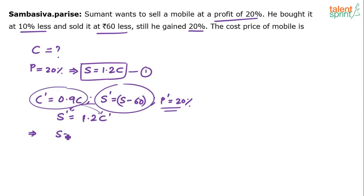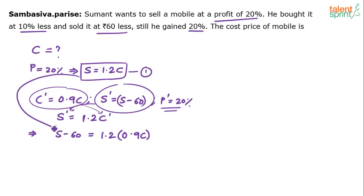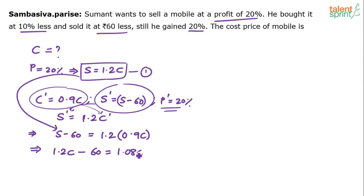S minus 60 equals 1.2 times of C', and C' is 0.9C. We also know S equals 1.2C from equation 1. Substituting: 1.2C minus 60 equals 1.2 into 0.9C, which is 1.08C. So overall the equation becomes 0.12C equals 60.